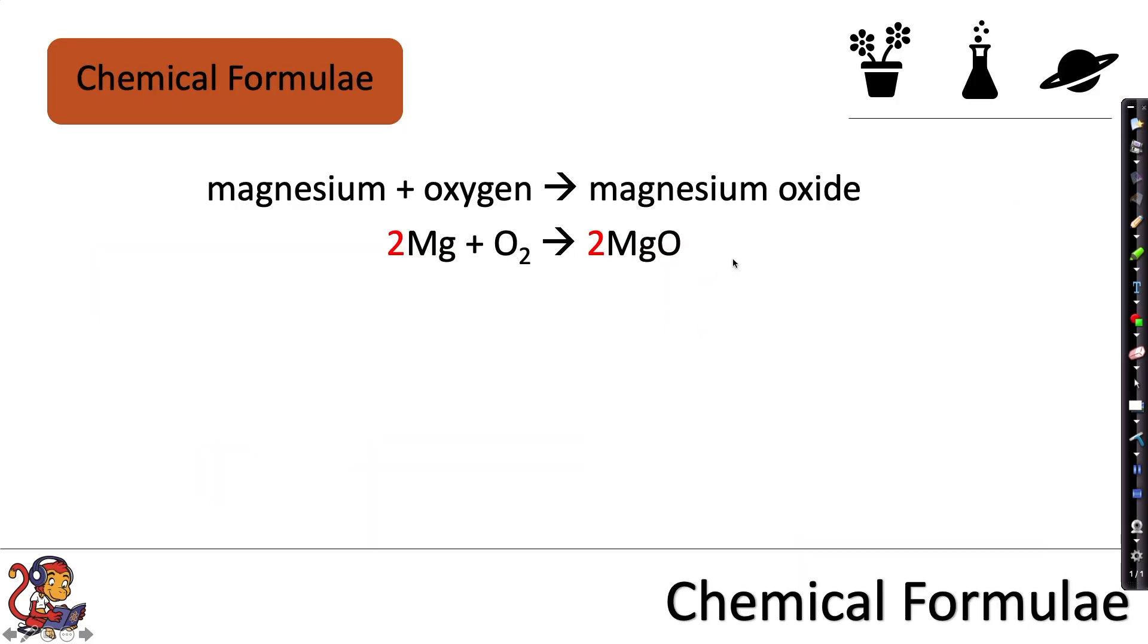We can use these chemical formulae to write symbol equations. For example, we could write a word equation for the reaction of magnesium with oxygen to produce magnesium oxide. But if we were to write a symbol equation, we can write it using chemical formulae to show that magnesium is reacting with oxygen to produce magnesium oxide.